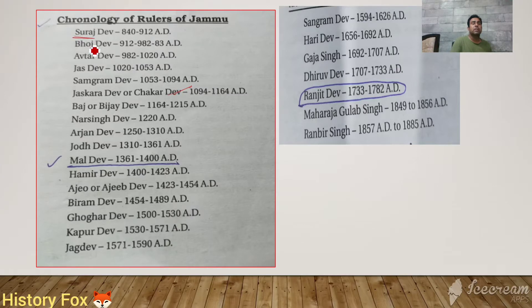So this was the chronology of Jammu rulers. Suraj Mal was the founder of the Dev dynasty, and in the last class we discussed about Mal Dev.